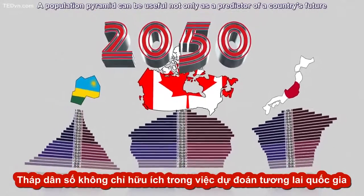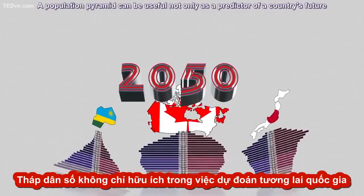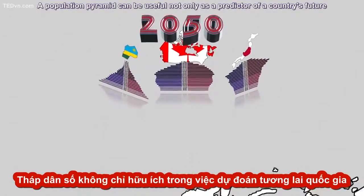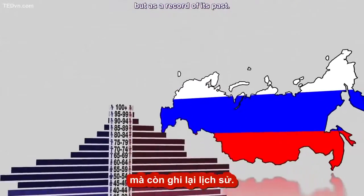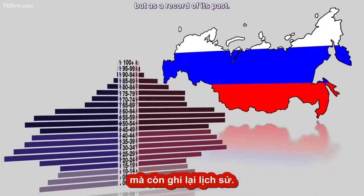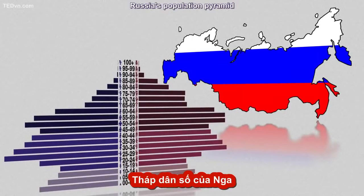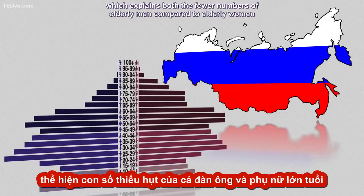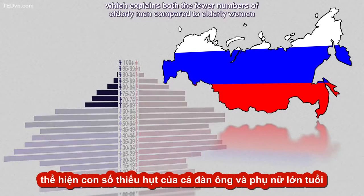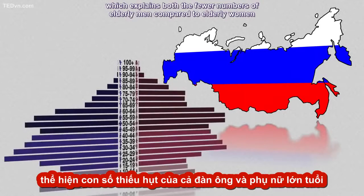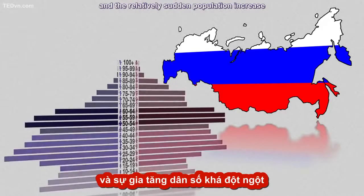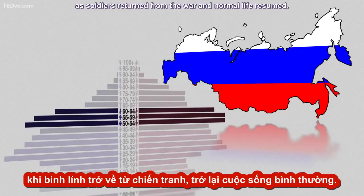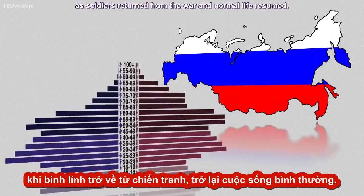A population pyramid can be useful not only as a predictor of a country's future, but as a record of its past. Russia's population pyramid still bears the scars of World War II, which explains both the fewer numbers of elderly men compared to elderly women and the relatively sudden population increase as soldiers returned from the war and normal life resumed.